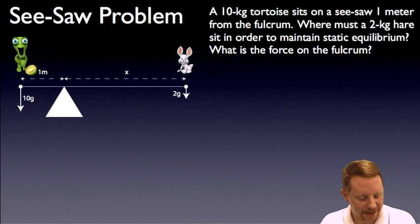In this case, we have a 10-kilogram tortoise, over here, sitting on a seesaw. He's one meter from the fulcrum, and he has a mass of 10 kilograms, so the force down on the seesaw is going to be 10 times the acceleration due to gravity, or 10g. On the right-hand side, we want to balance our tortoise with the hare, of 2-kilogram mass. So the force, the gravitational force on our hare is its mass times acceleration to gravity, or 2g's down, at some unknown distance from the fulcrum of our seesaw. Where must that hare sit in order to maintain static equilibrium? And let's also find the force on the fulcrum when we're all done.